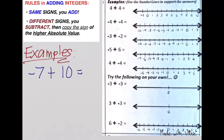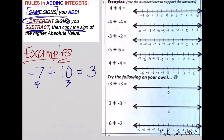We have negative 7 plus 10. Are they of the same signs? No, because one is negative 7 and the other is positive. So you know what to do with different signs — you have to subtract. The difference between 7 and 10 is 3. Whose sign are we going to copy? The one of higher absolute value, farther from 0 on your number line. That's 10 spaces away from 0, which is our positive number. So you're going to have a final answer with a positive sign.